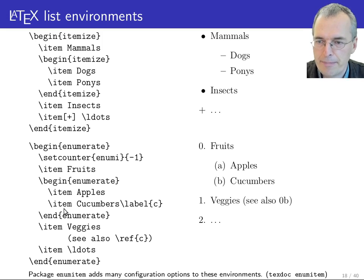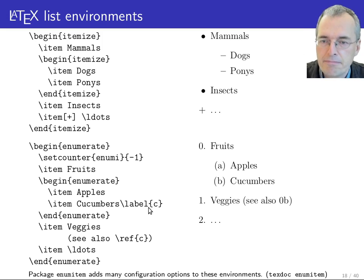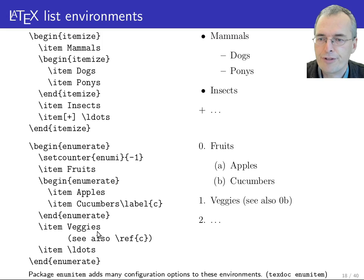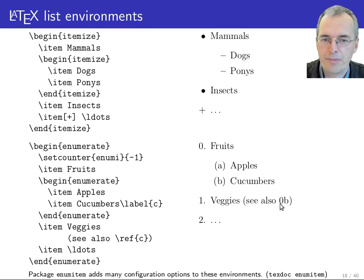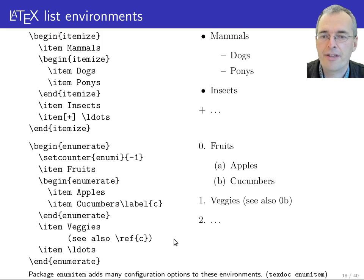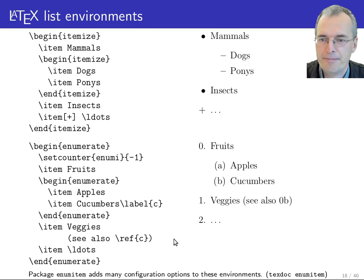You give a symbolic name to the number of that item by placing backslash label followed by some name in the text after the item. For example, using the label 'c' for cucumbers — which is item 0b — you can then use the ref command to refer to that item, and it will automatically be replaced with 0b. This same label-ref mechanism also works for section numbers and page number references.